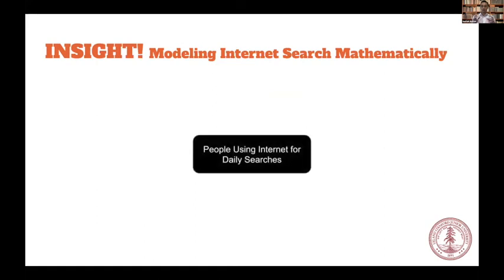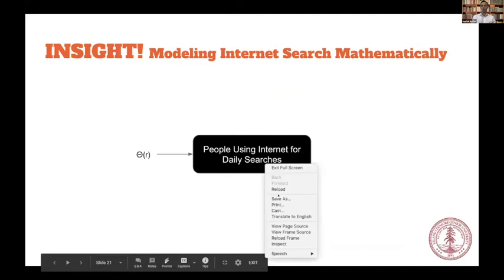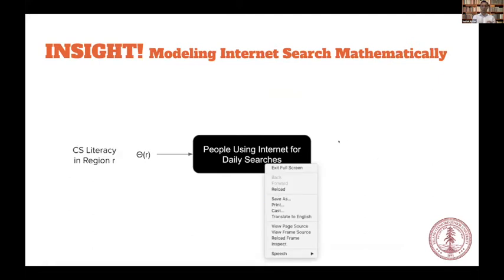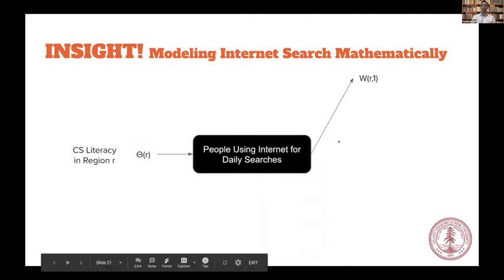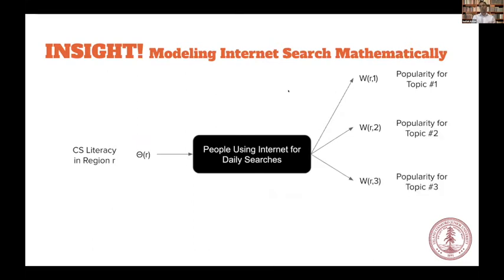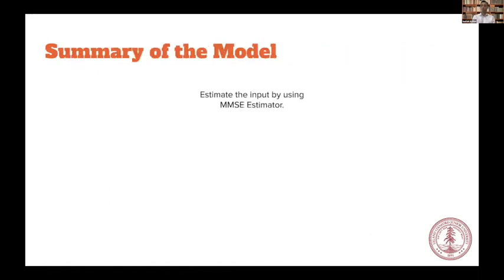Let's see how we process it. We take the internet as a black box system, which takes computer science literacy as input and produces popularity for topics as the output. Thanks to the Google Trends data we have, we are able to calculate those topic popularities. All we need to do is reverse engineer this system and try to estimate what was the input in the first place. For that, we use a minimum mean square error estimator, which is widely used in many fields such as communication technologies — it is used to estimate the input in the presence of lots of noisy outputs.